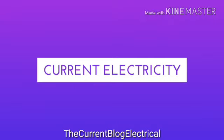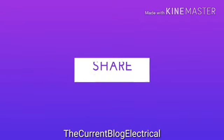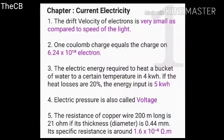Chapter current electricity, question 15. Subscribe, share and like. The drift velocity of an electron is very small as compared to the speed of light. Number two: one Coulomb charge equals the charge on 6.24 into 10 to the power 18 electrons.